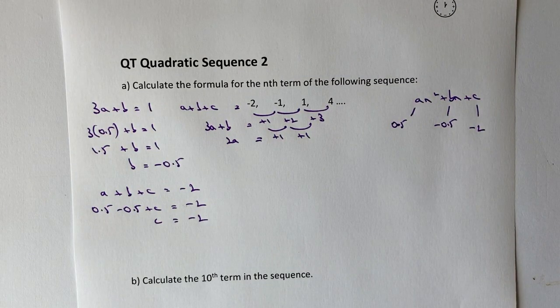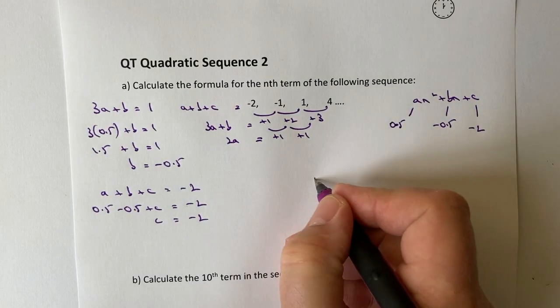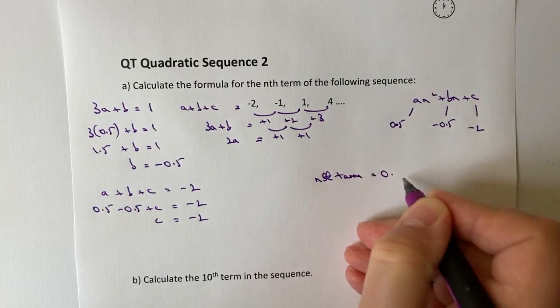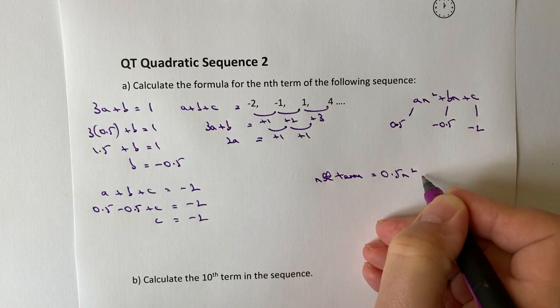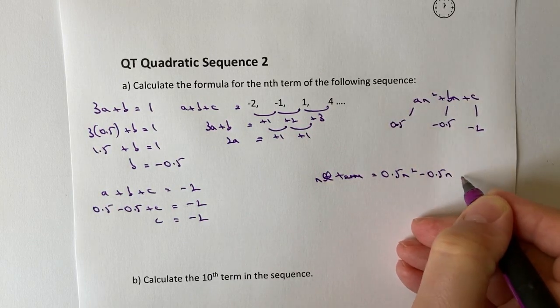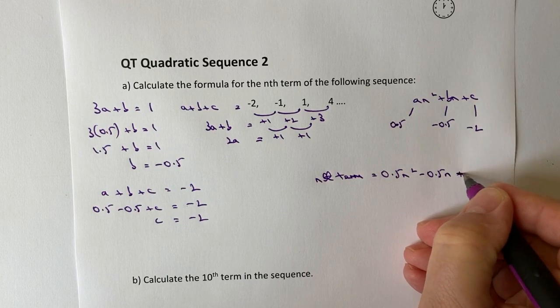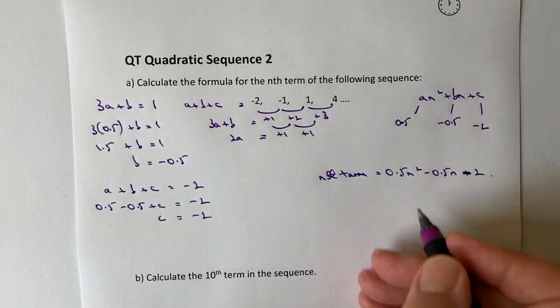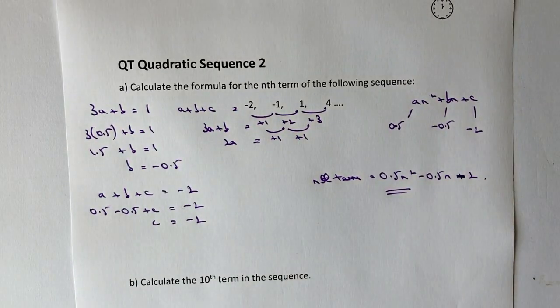So when I write the nth term formula out, I can write that as the nth term is going to equal 0.5n² - 0.5n + (oh big pen) -2. And that would be the answer to the first part of this question.